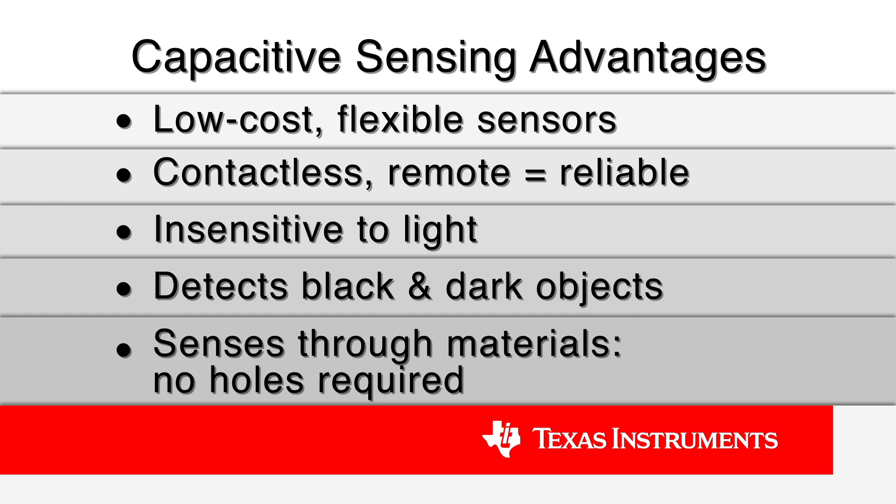It is unaffected by ambient light and can detect the presence of black and dark objects. And also, it can sense through the material, thus avoiding drilling holes in the sensing product.